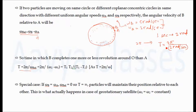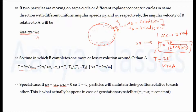So this is the time taken by object b to cover one more revolution than a. We can write t = 2π / omega_relative, which equals 2π / (omega_2 minus omega_1). Since we know that t = 2π / omega, we can write omega = 2π / t, so the formula becomes 2π divided by (2π/T_2 minus 2π/T_1).